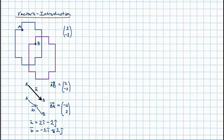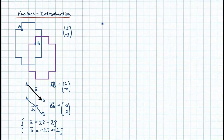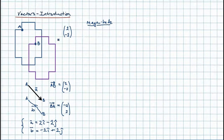Column vector notation and i/j notation mean exactly the same thing; it's just a matter of convenience. When working geometrically it's usually more convenient to use column vectors. Now let's focus on what a vector contains: magnitude and direction. Let's start with magnitude — it simply means size, or the modulus of the vector. It tells us how long the arrow is.